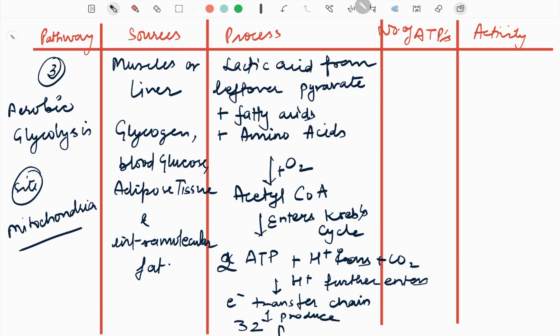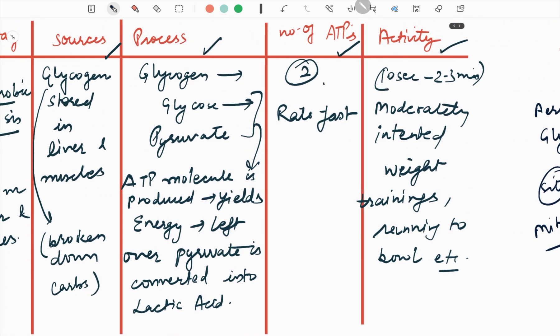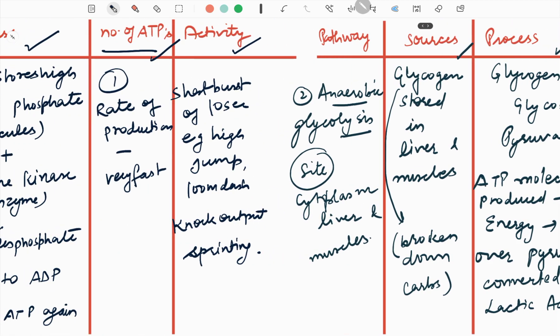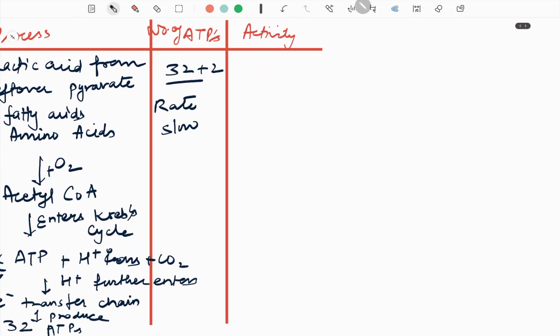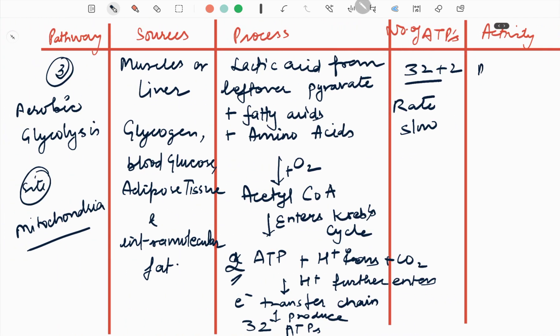So basically here 32 ATPs are formed. Rate is slow. 32 plus 2 equals 34 in this case aerobic, and 2 in this case and 1 in this case. You should know about the ATPs formed and activities related to aerobic glycolysis: marathons which can take place between 3 minutes to hours.